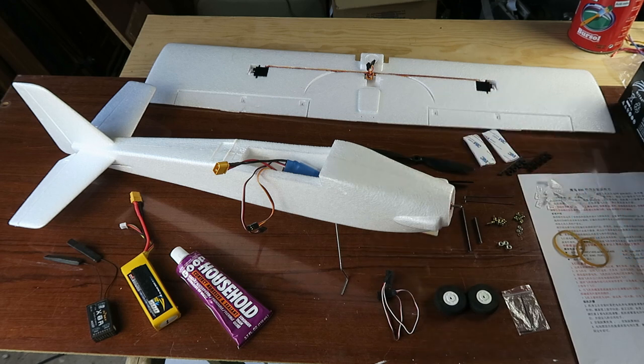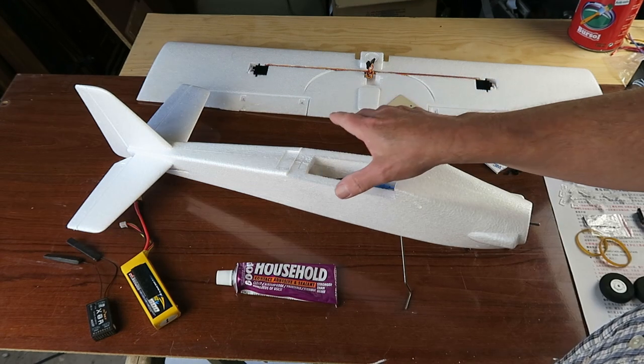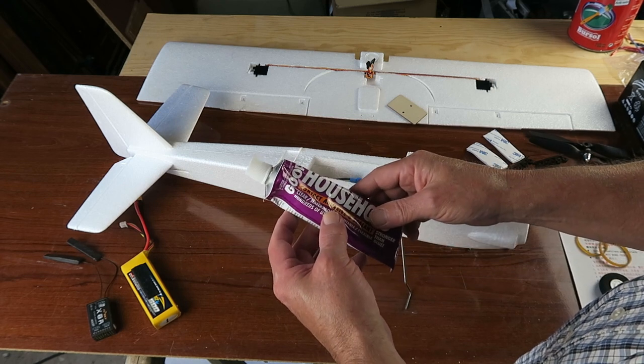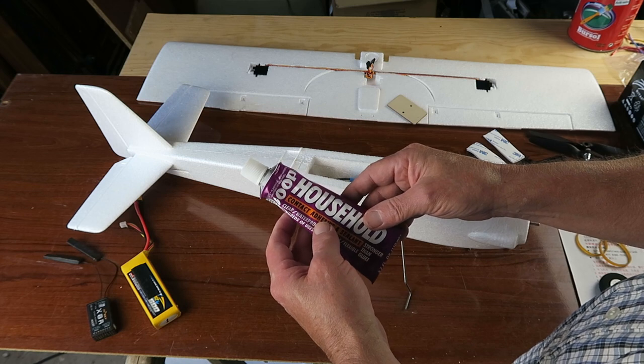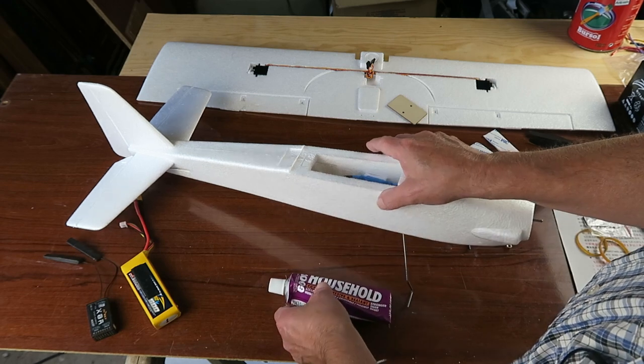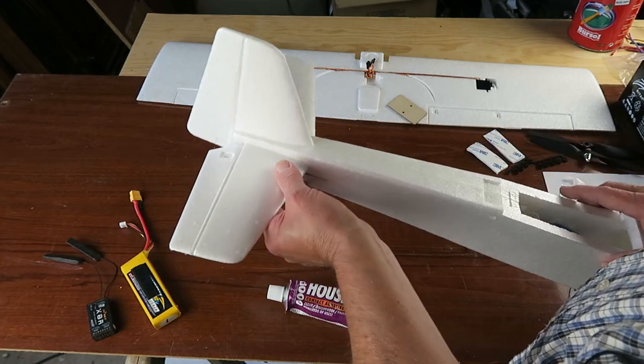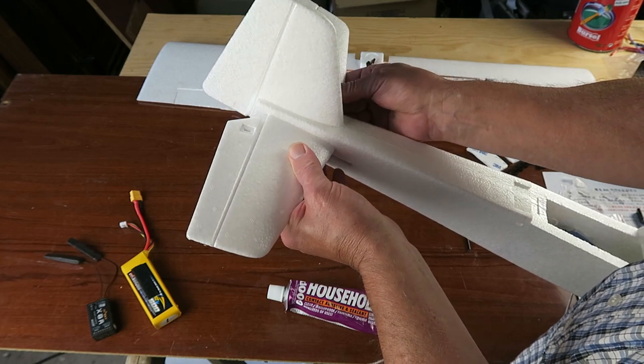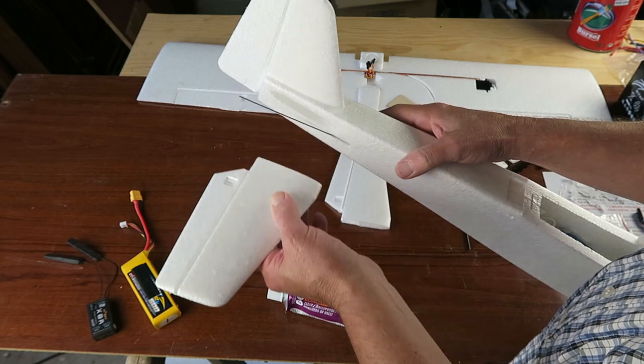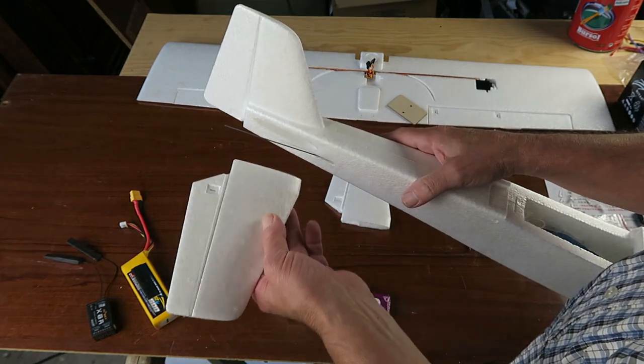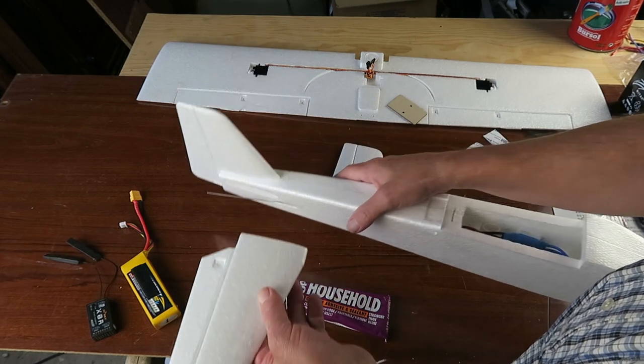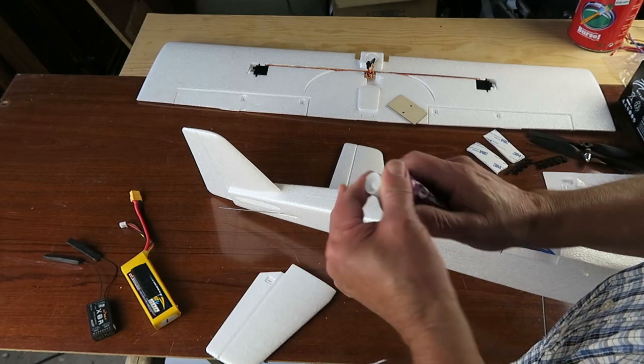Let's get the tail plane glued on. I'm going to be using this goop glue, and although it contains toluene, it is foam safe so it won't affect the EPP. You could use something like hot melt glue which will be quicker. The goop takes maybe 20 minutes to dry, but it gives you time to make sure that things are lined up and everything is straight.